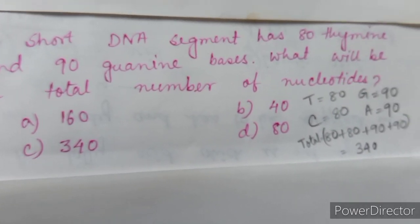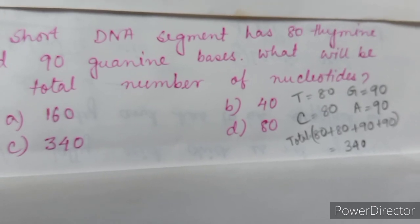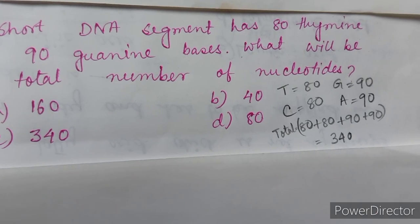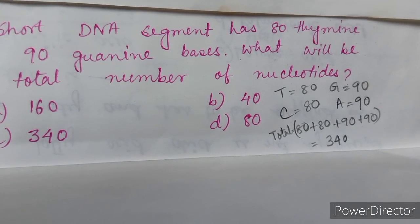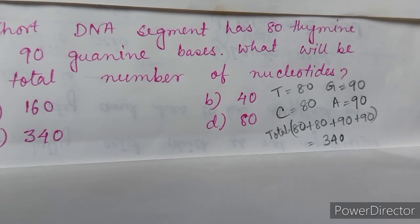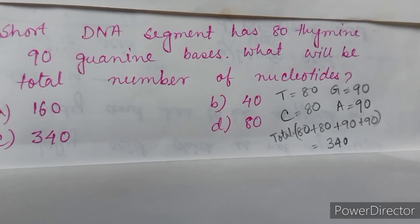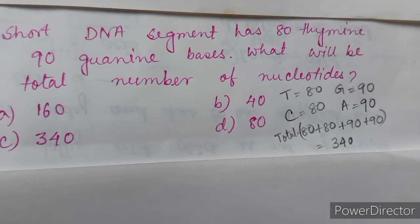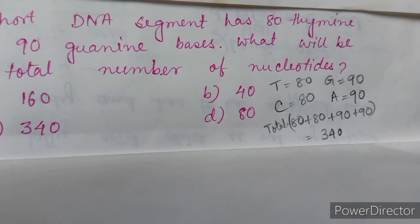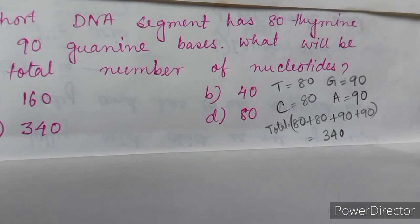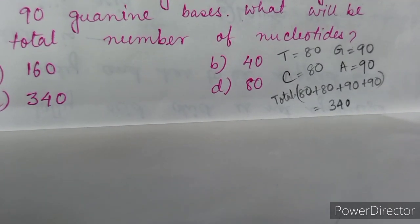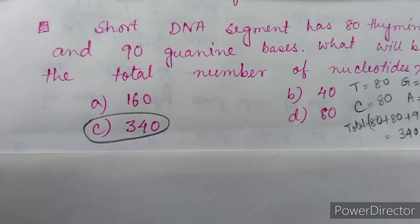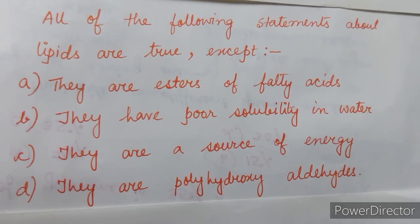Thymine is a pyrimidine base, and the other pyrimidine is cytosine, so the number of cytosine will also be 80. The total number of thymine and cytosine is 80 + 80 = 160. Guanine is a purine, and its count is 90, so the other purine — adenine — is also 90. Total nucleotides = 80 + 80 + 90 + 90 = 340. Correct answer is option C: 340.